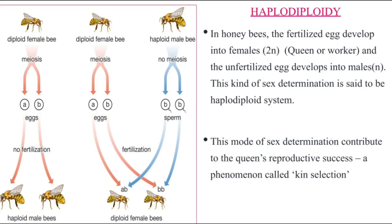The unfertilized egg develops into a male by the process of parthenogenesis. These males are called drones, and they have only half the number of chromosomes, making them haploid. In honeybees, queens and workers contribute to reproductive success. Workers indirectly pass on their own genes by supporting the queen — this phenomenon is called kin selection.